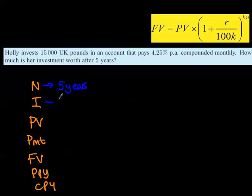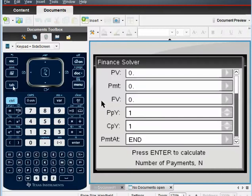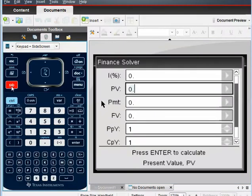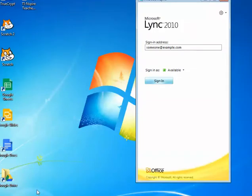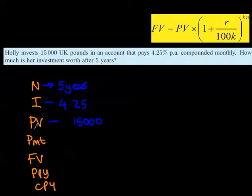I stands for the interest rate, which is 4.25. Now PV is the present value, and it's 15,000. PMT stands for, if we go down to this cell here, if we press the tab button, that's the best way to go to the next one. It says payment, she's not making any payments, so you can get rid of that. Future value is the one we want, so put a question mark against this.